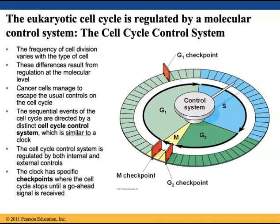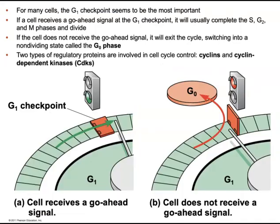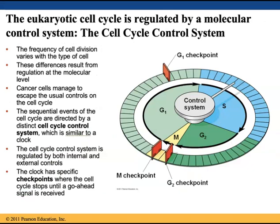For many cells, the G1 checkpoint seems to be the most important. If a cell receives a go-ahead signal at the G1 checkpoint, it will usually complete the S, G2, and M phases and divide. If the cell does not receive the go-ahead signal, it will exit the cell cycle, switching into a non-dividing state called G0 phase. Cells also have a checkpoint at G2 and M phase. If the mitotic spindle is not properly attached to both sister chromatids, the cell will abort division.